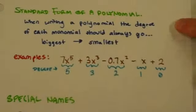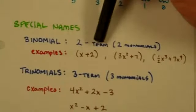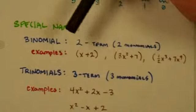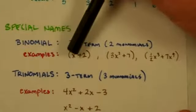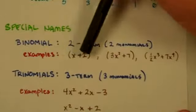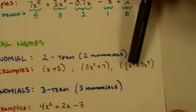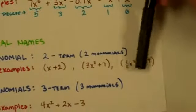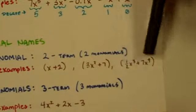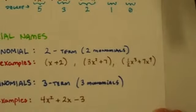Also just a few special names for polynomials. We have binomials which are two terms or two monomials, and these are going to be important for later on. We have x plus 2, 3x squared plus 7. Notice how there's two monomials put together. And even a half x to the third plus 7x to the ninth, something that crazy. Now notice that's not in standard form, I should switch it around.